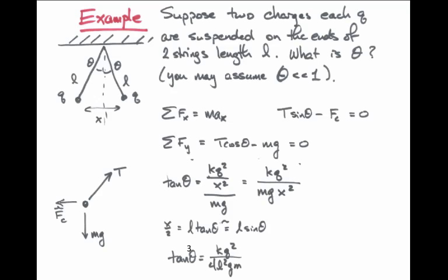If we insert that in our expression for x and get rid of x, then we find that tangent cubed of theta is equal to Kq squared over 4L squared mg. And this gives us the angle theta in terms of quantities that we already knew, the constant k, the charge q, the length of the string, and the mass times little g.